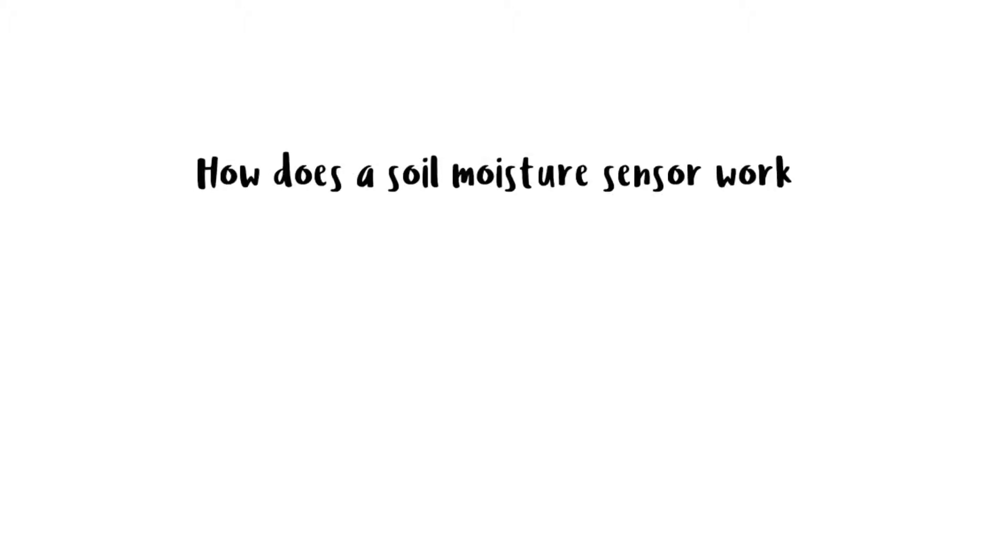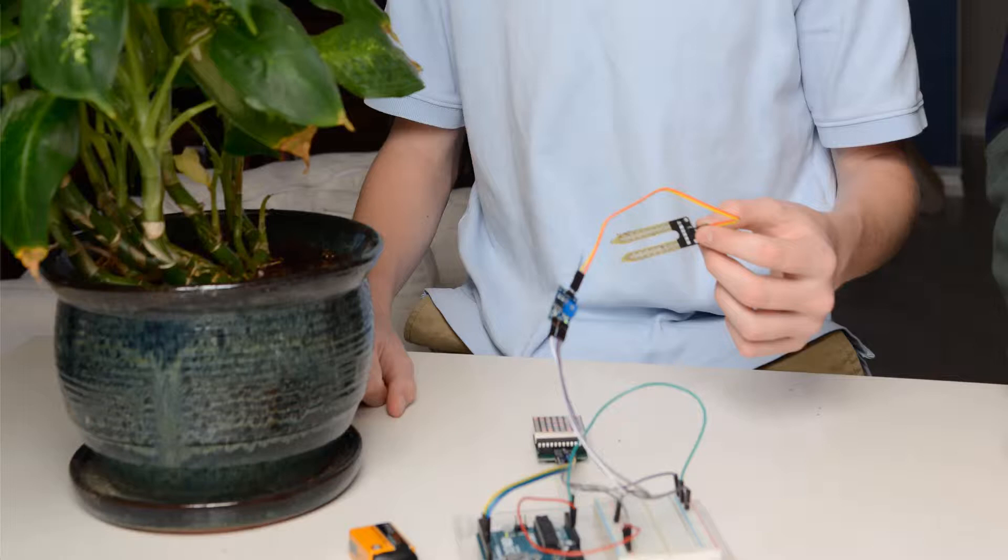How does a soil moisture sensor work? A soil moisture sensor can be used to measure how wet or dry soil is, allowing us to keep our plants happy and healthy. Let's take a look at how they work.